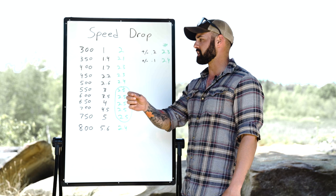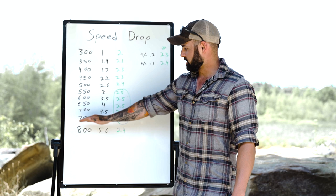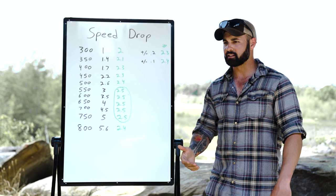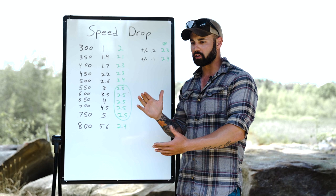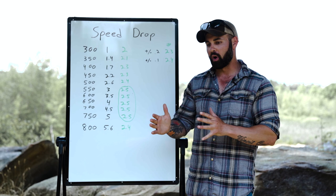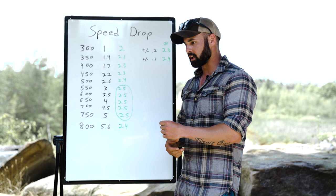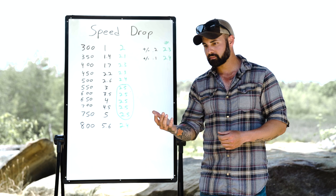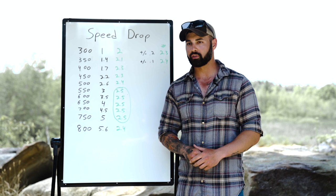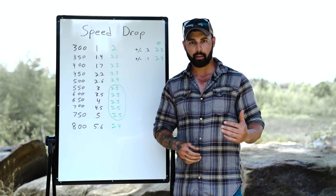I wrote down my DOs for these distances, starting at about 300 out to about 800, depending on the altitude I'm at, because this is generally the range where speed drop is applicable. The distance you want it applicable depends on the amount of error you're willing to accept, which we'll see in a moment. The goal of speed drop is to make your range your hold — just subtract your speed drop number from the range on the fly, and that's your hold. This is hands down my favorite way of engaging targets rapidly.